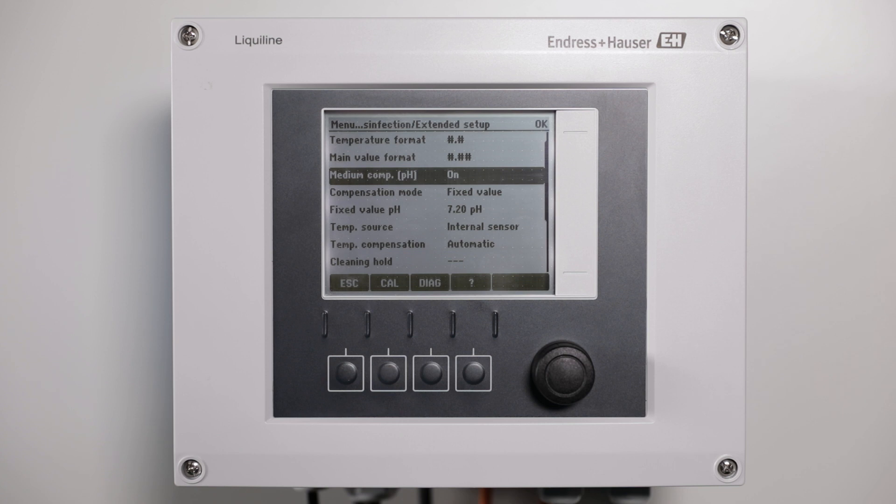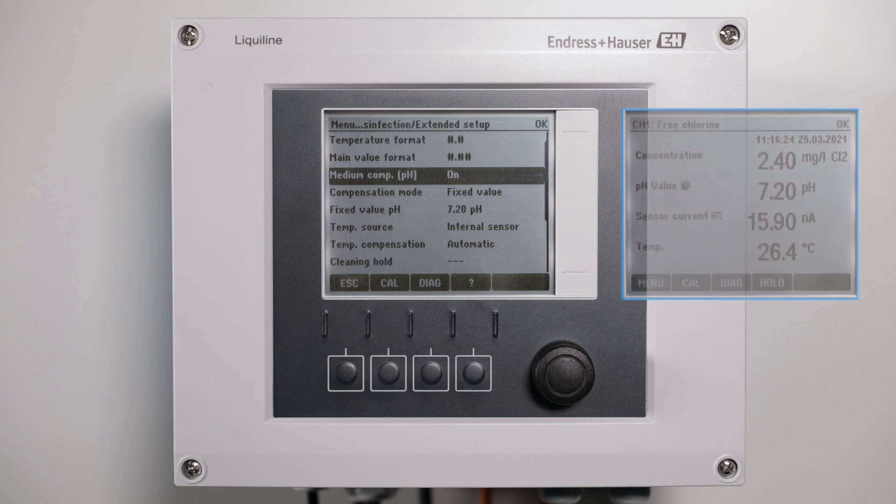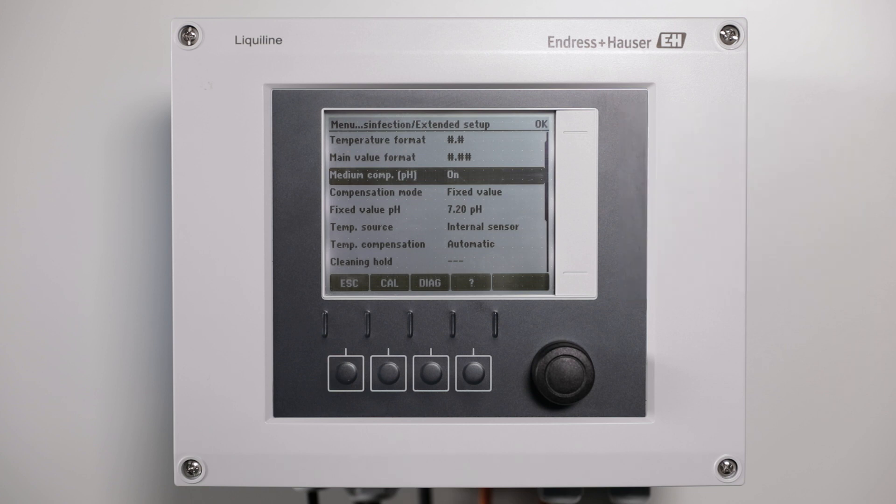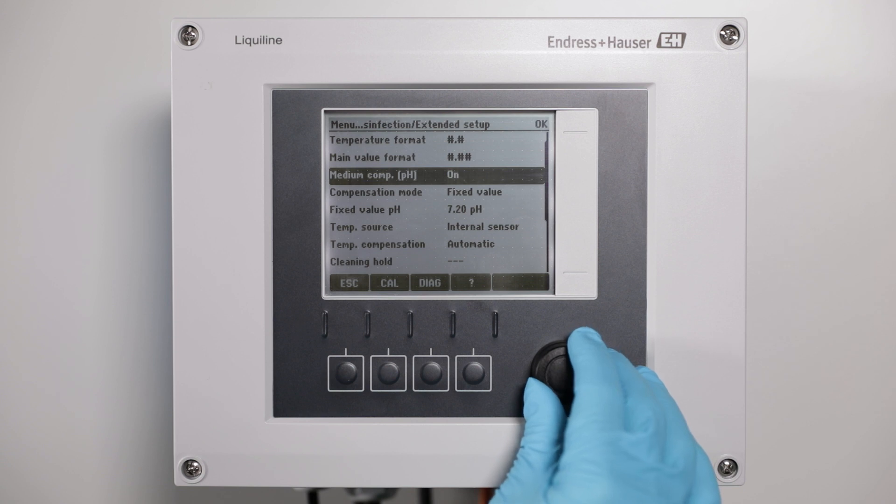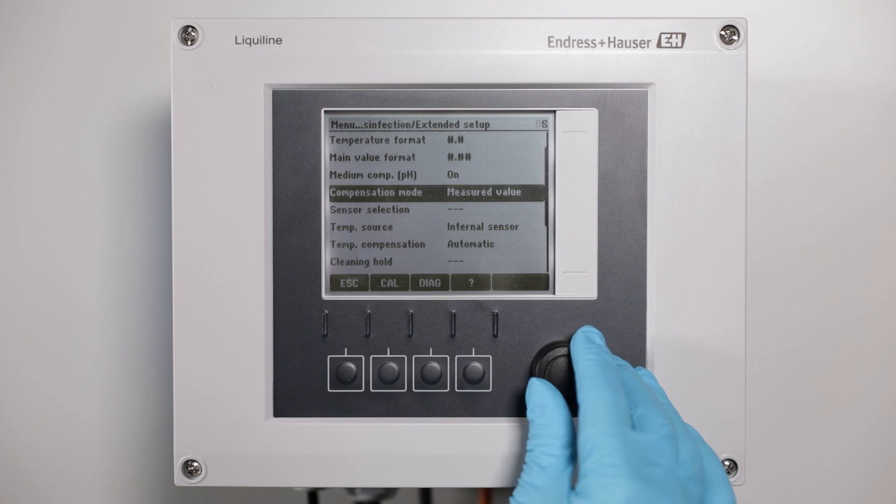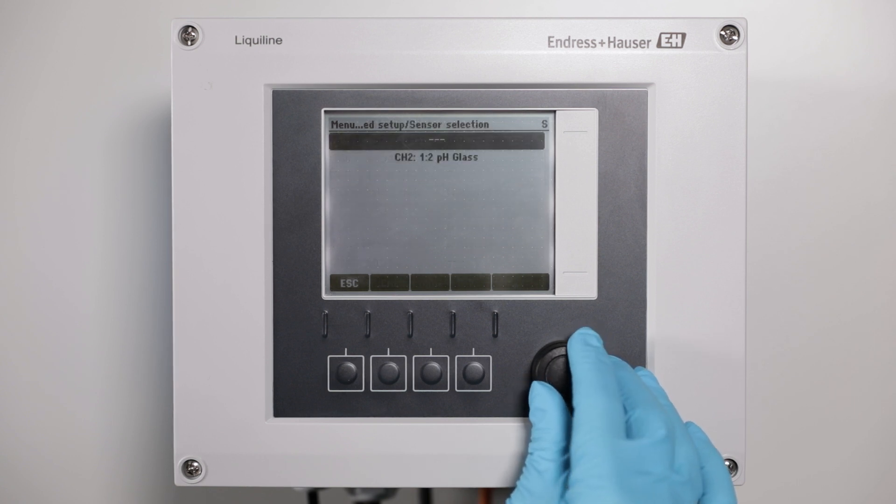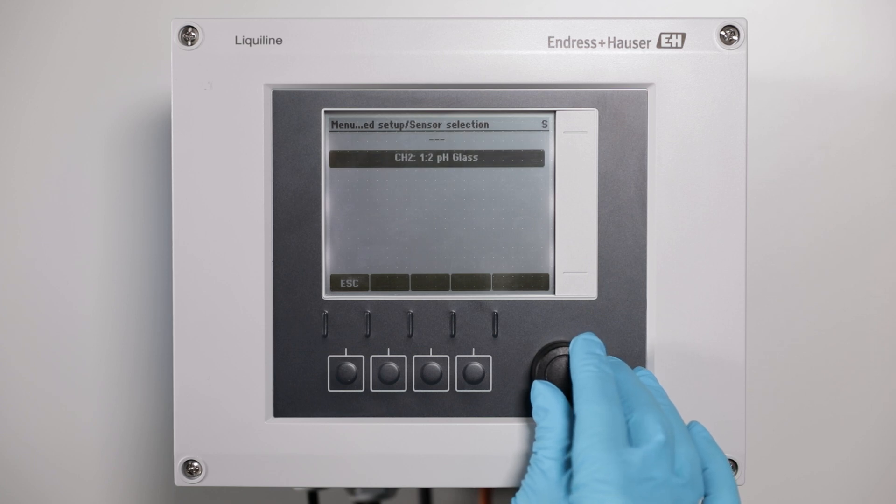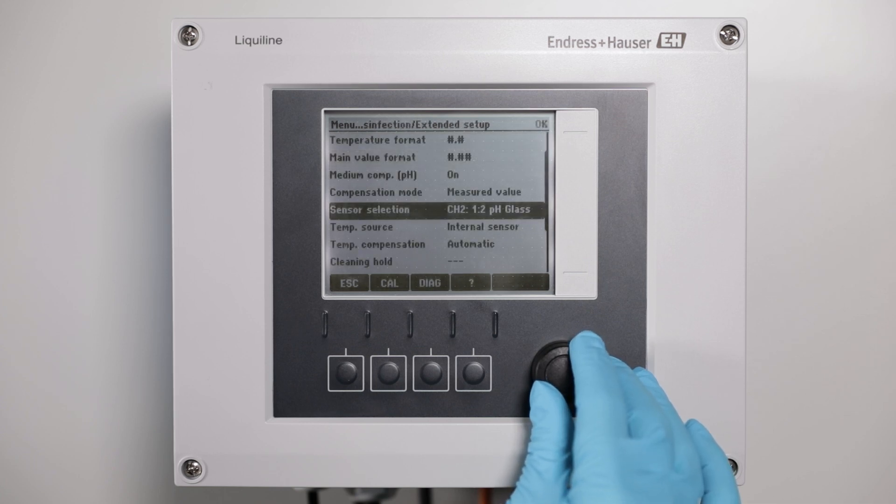Per default the pH compensation is on and related to the fixed value of pH 7.2. This is shown by the hand symbol on the measurement screen. To use the value of the installed pH sensor for compensation, go to Compensation mode and select Measured Value. Scroll down to the sensor selection and assign the respective pH sensor from the sensor selection.